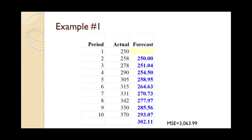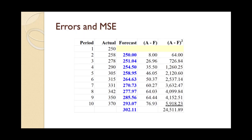For the forecast shown on the slide, prepare a z equal 3 control chart and comment on its meaning. Note that the mean squared error is 3063.99. This slide shows the calculation of the errors.